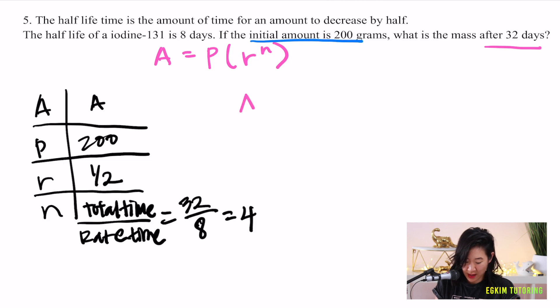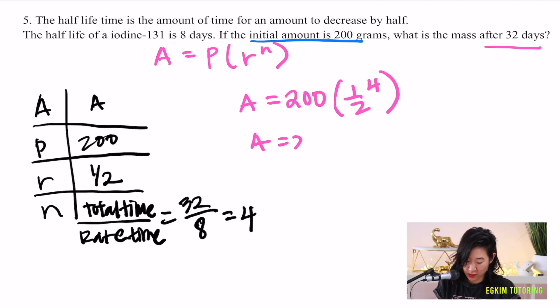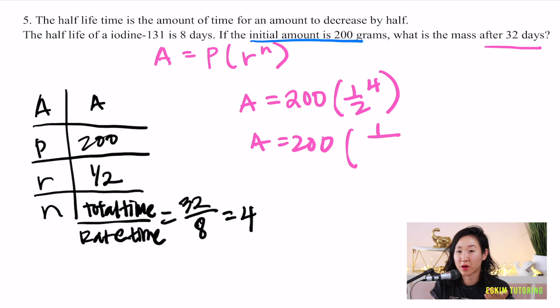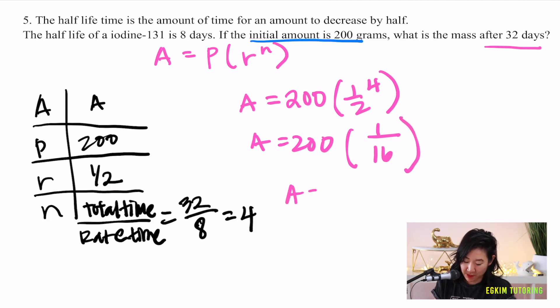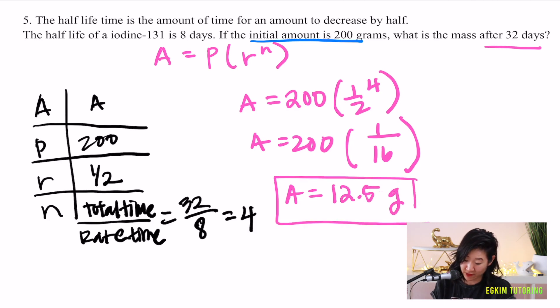So a equals 200 times (1/2) to the power of 4. Since 2 to the 4th is 16, this becomes 200 times (1/16), which equals 12.5 grams of iodine-131 after 32 days. I hope you enjoyed this video — there's another video on harder exponential function problems, feel free to check it out. Thanks!